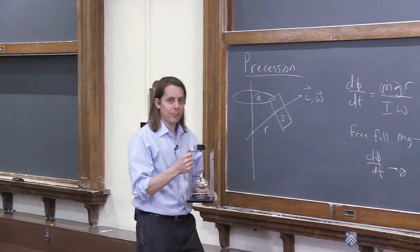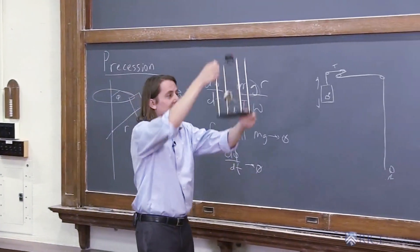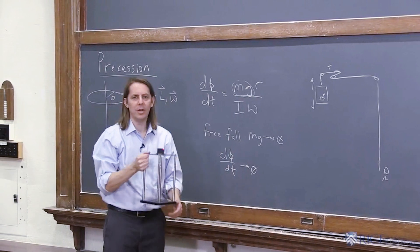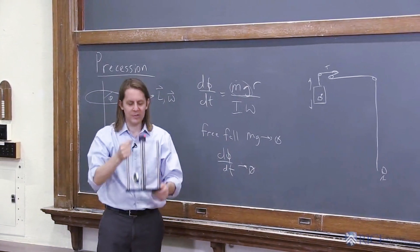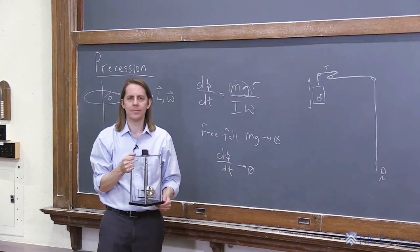So that was true free fall and you saw that as it went down, Mg went to zero and the precession completely stopped. Once it hit the ground, it started again. Thank you.